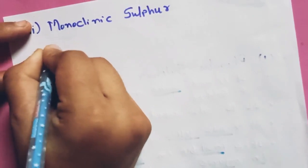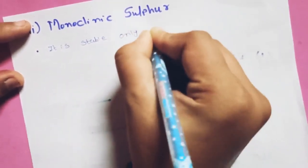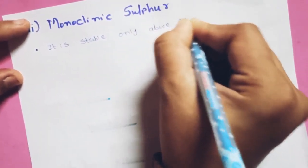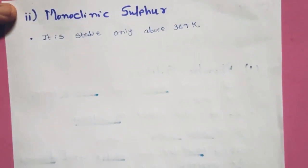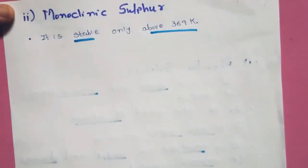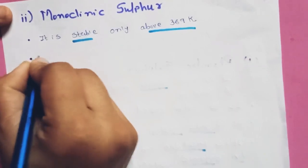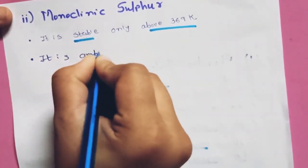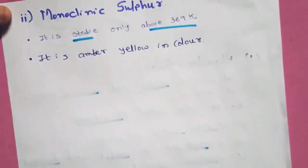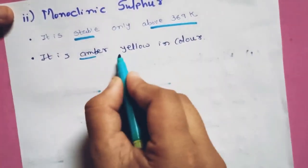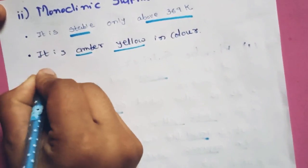The second allotrope is monoclinic sulfur. It is stable only above 369 Kelvin — so above 369 Kelvin this form becomes stable. Its color is amber yellow, meaning it is slightly darker than rhombic sulfur which was pale yellow — monoclinic sulfur has an amber yellow color.